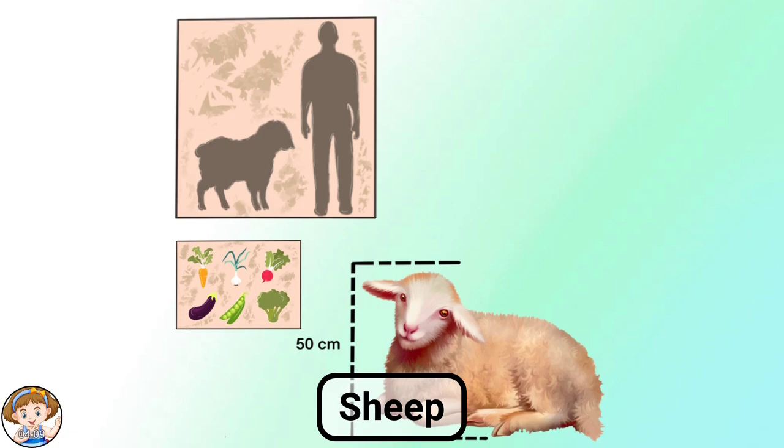Sheep have a good memory. They remember the shepherd who grazes them. If you take several flocks and mix them, then only the sheep from his flock will follow the shepherd. In addition, sheep have excellent hearing. Therefore, they are afraid of harsh sounds.